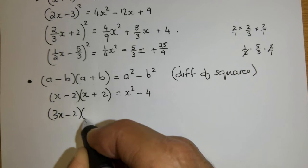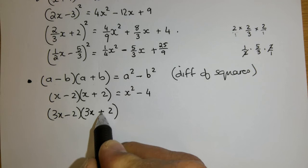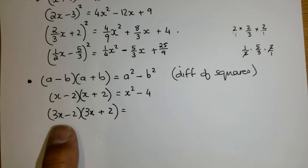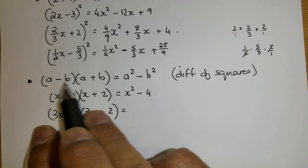3x plus 2. What must I have here? 3x minus... That's a minus, so this must be a plus 2. 3x minus 2. 3x plus 2. Again, the things are the same. a and a, b and b. Minus and a plus.